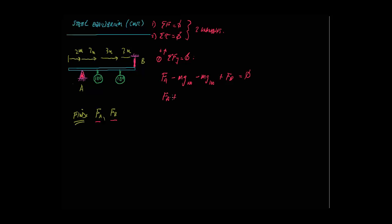So we get FA plus FB equals this mg plus mg. If we combine those, it comes out to be 200g, which is, you know, 19 whatever that is. We'll figure that out. All right. So there's equation one.